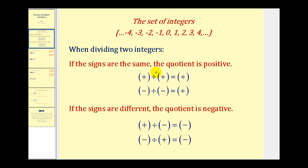If the signs are the same, the quotient is positive. So a positive divided by a positive is positive, and a negative divided by a negative is also positive. And if the signs are different, the quotient is negative. So a positive divided by a negative is negative, and a negative divided by a positive is also negative.